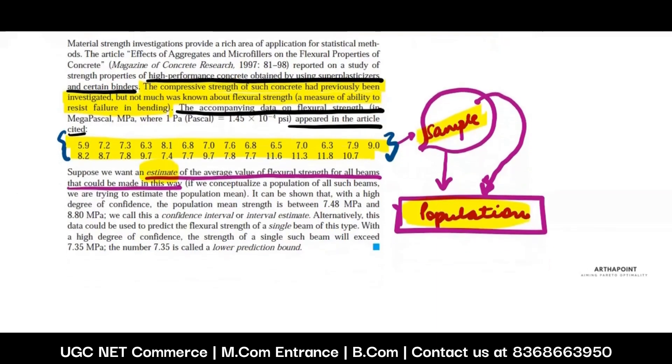And not only that, we also want information about something known as the confidence interval and the prediction bound. These are individual chapters upon which we will focus. But here, what we are trying to say is that based on the information within the sample, we can be confident enough that whatever information I have gained from the sample actually belongs to the population. When we do that, that is a part of inferential statistics.